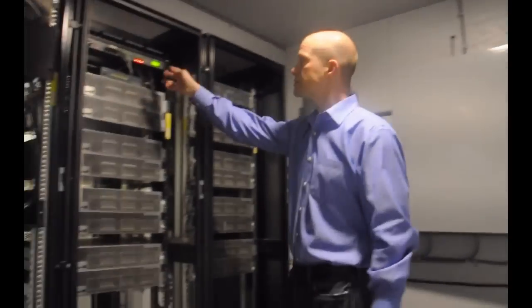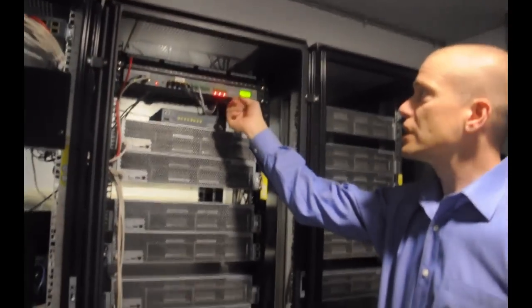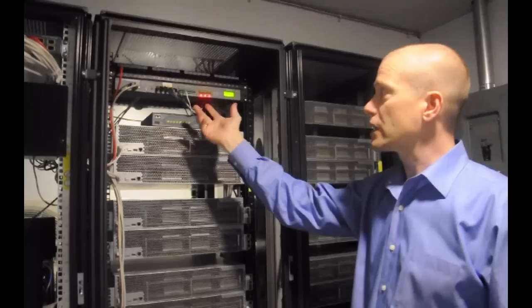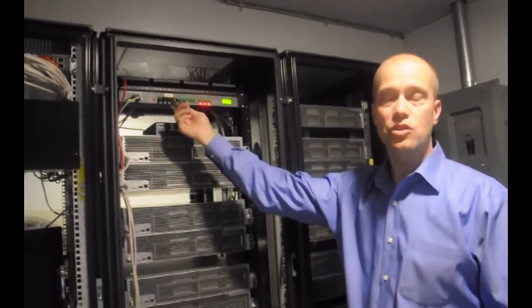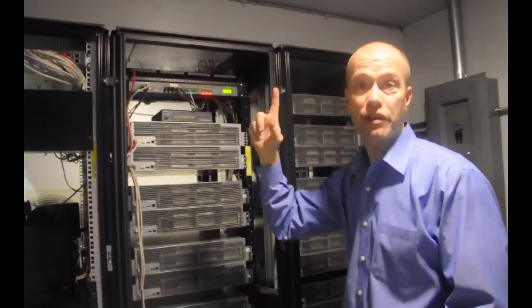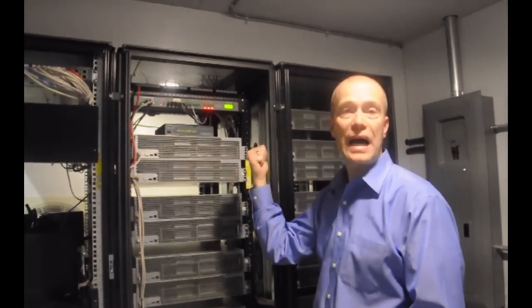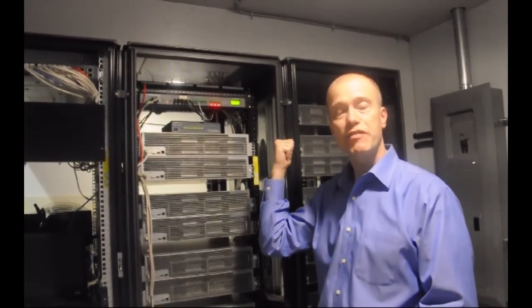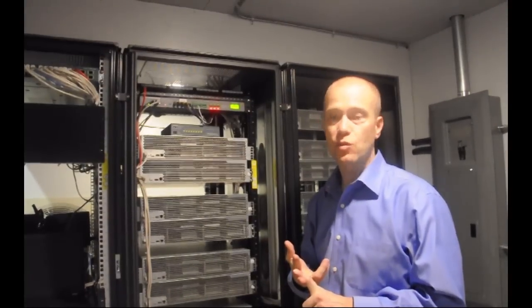We also have environmental monitoring. This is one of the units that we use, and it's really quite slick. We have four different temperature sensors in here, so we monitor temperatures in four different locations outside the unit. Air coming in, air on the back, air on the front, and then we also have an air flow control, dew point, humidity sensor as well.